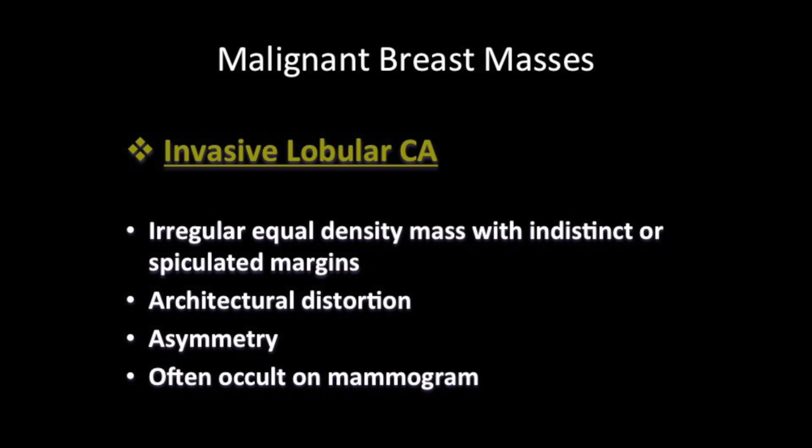The second type, invasive lobular carcinoma, presents as an irregular equal density mass with indistinct or spiculated margins, asymmetry or architectural distortion on mammograms. It is often occult on a mammogram.